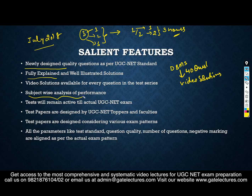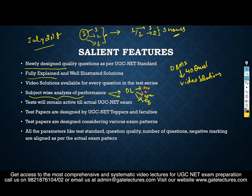Each subject-wise test will also include performance analysis. For example, in Digital Logic, there are sections like number systems, combinational circuits, and sequential circuits. When you attempt a test and score well in one section but not another, the analysis will show you exactly where you stand in each section.